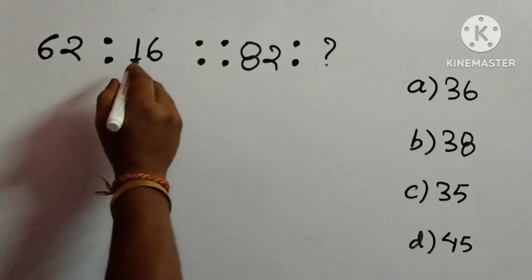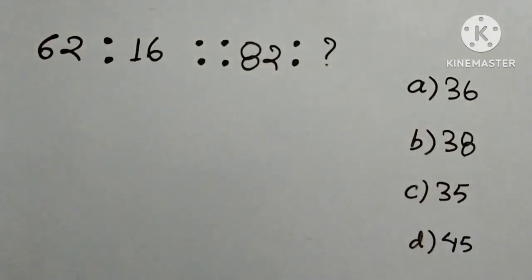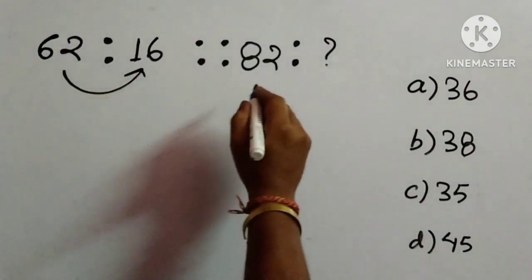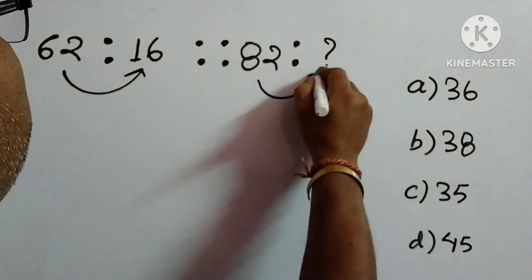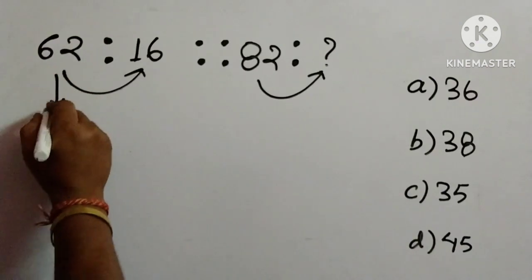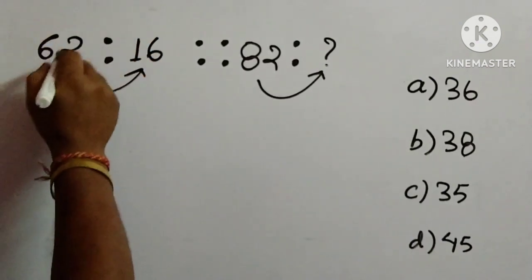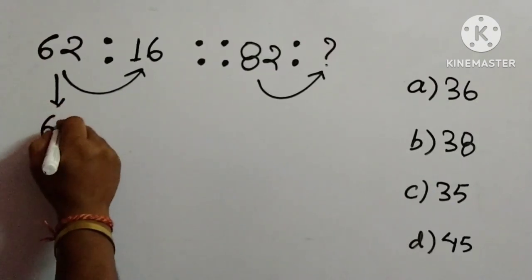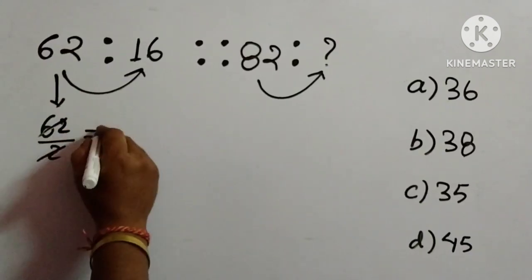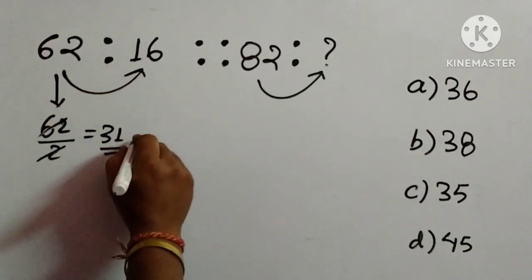Next question: 62 is to 16 is equal to 82 is to what? We have to find out this number; four options are given. As usual, we try to get 16 out of 62 and then implement the same process to get the answer from 82. We consider 62. Since 16 is quite smaller than 62, we first try dividing by 2: 62 divided by 2 gives 31, but 16 is given, so this does not work.